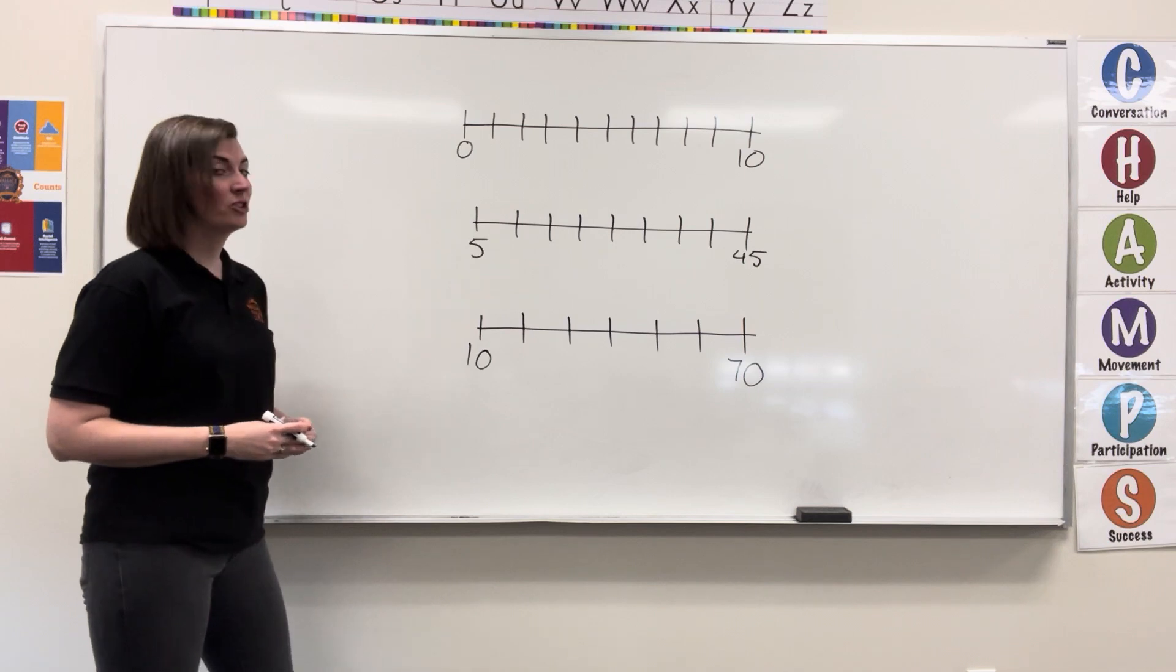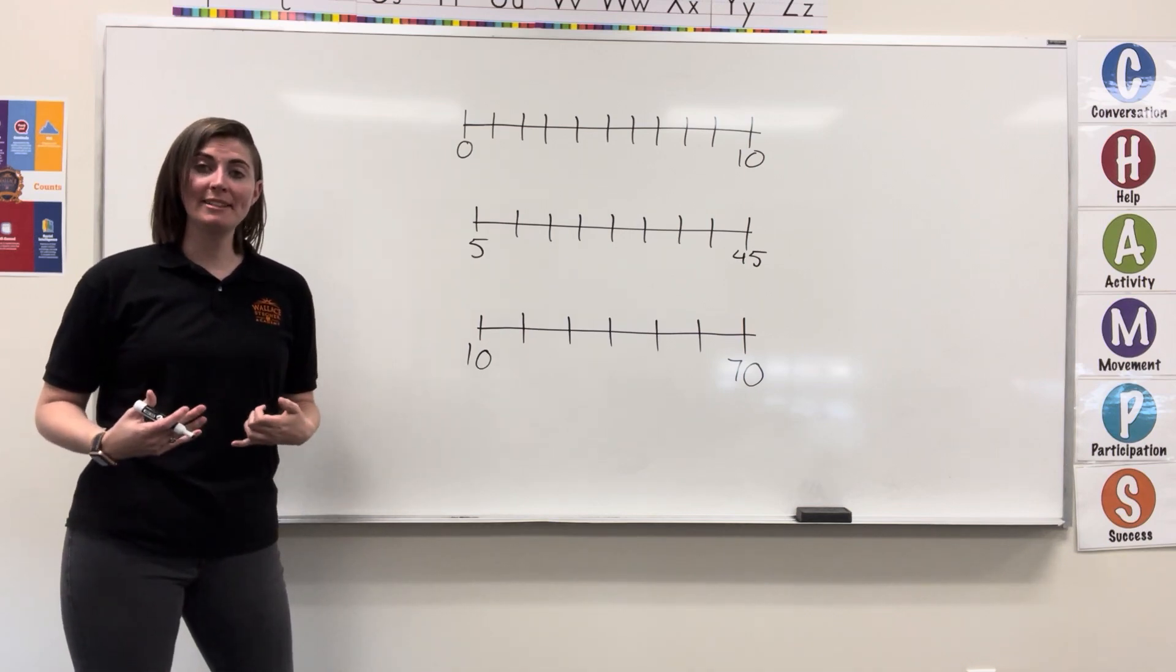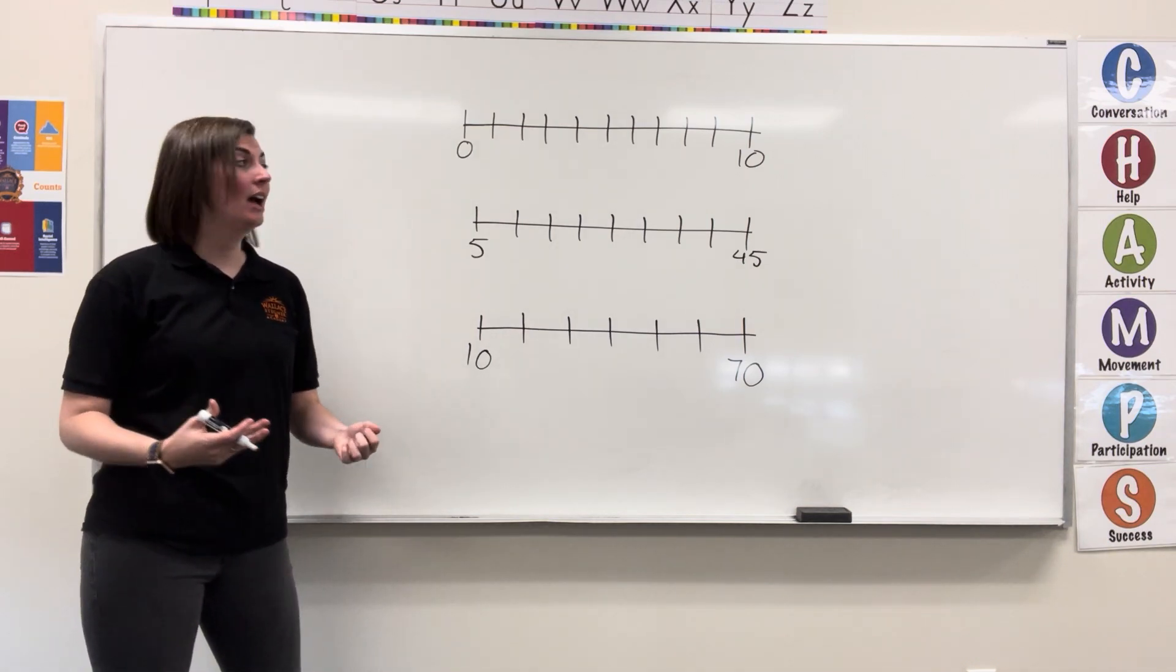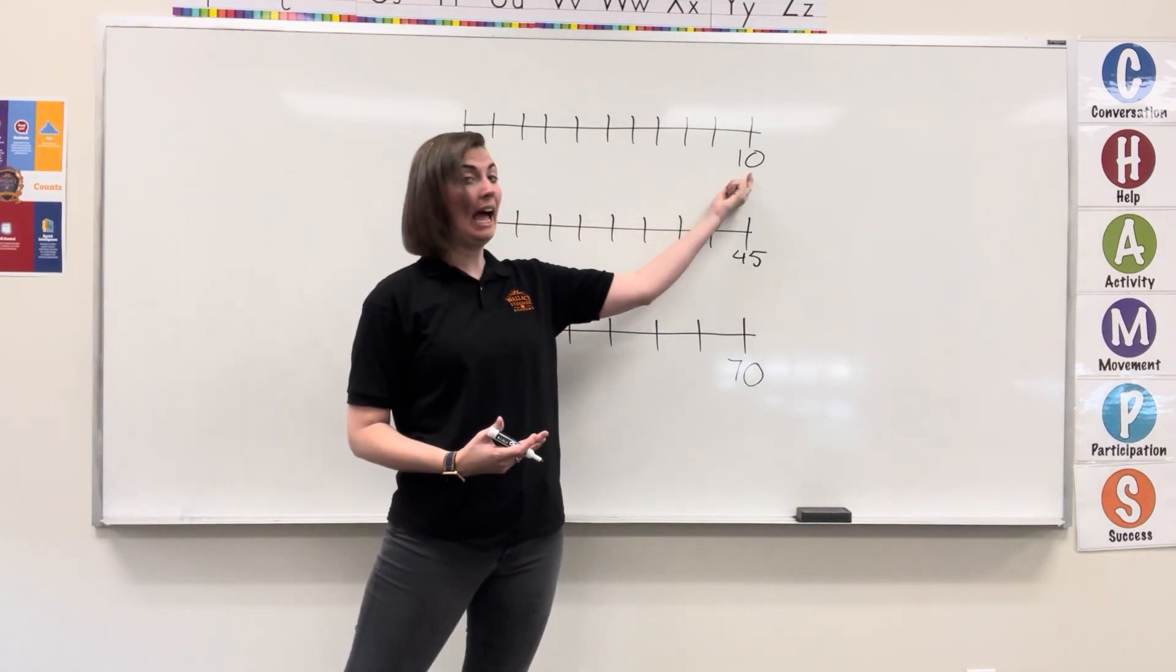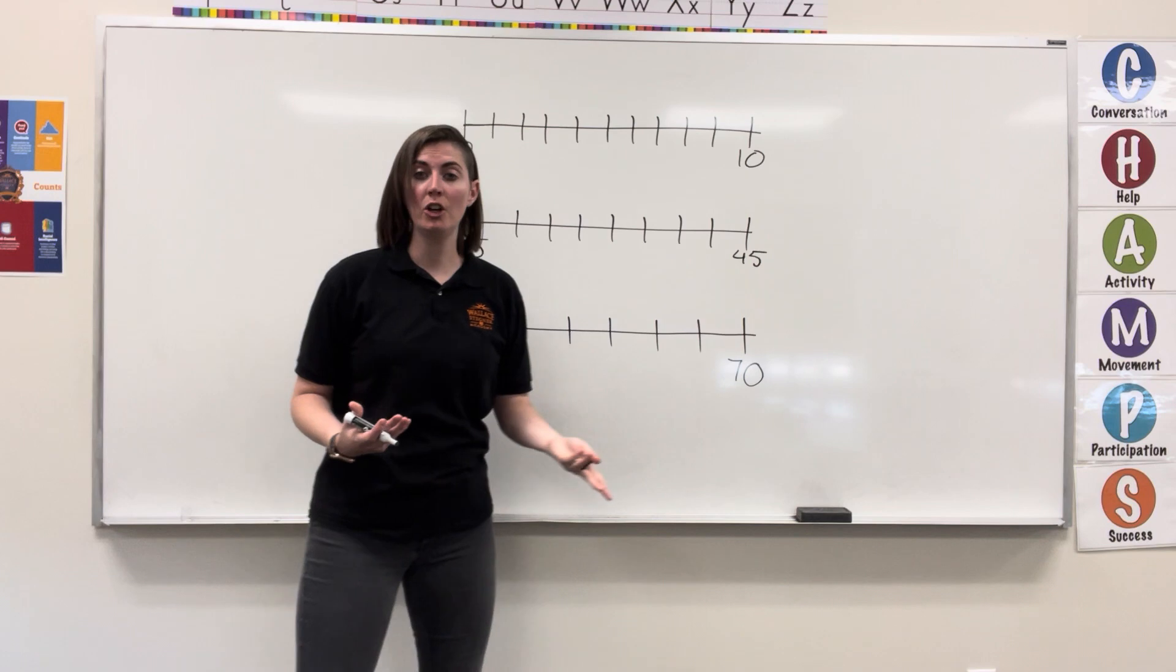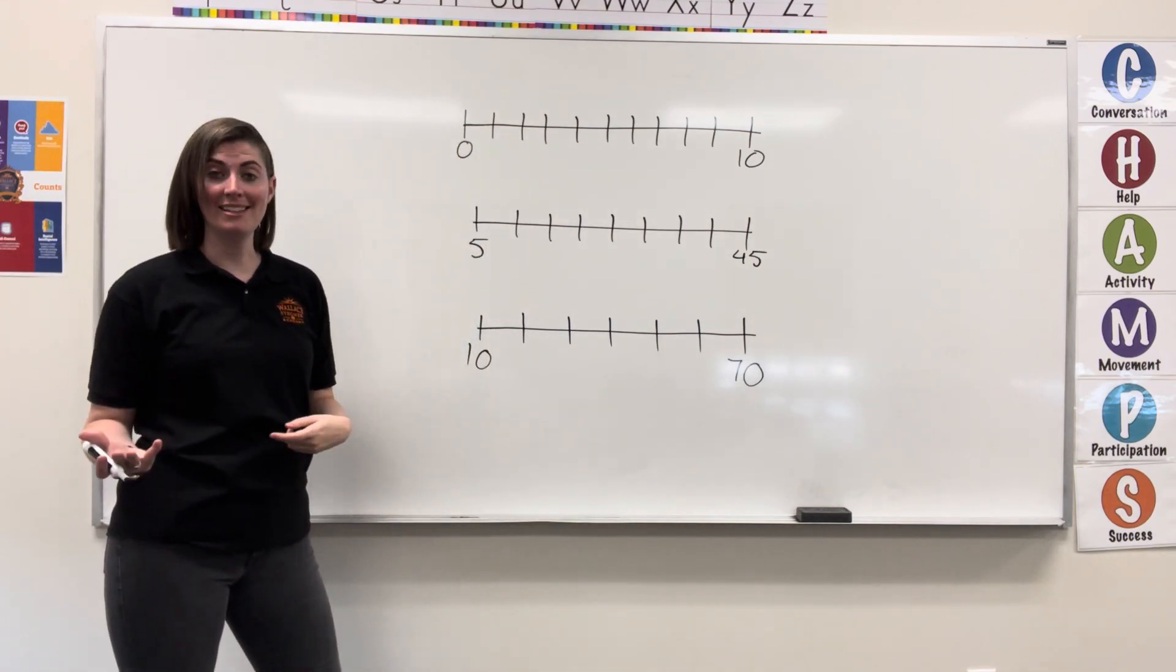When you're given a number line, you first have to determine what is this number line counting by. I know that this first number line starts at 0 and it ends at 10. It could be counting by 1's. Let's see if it works.